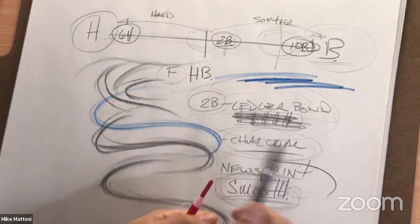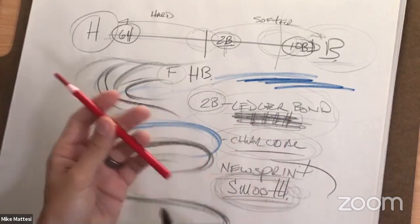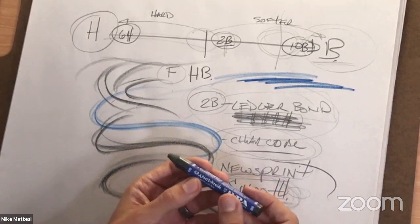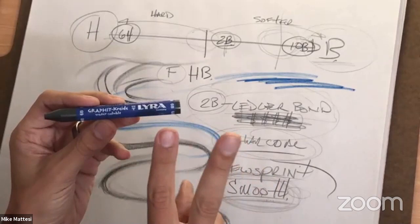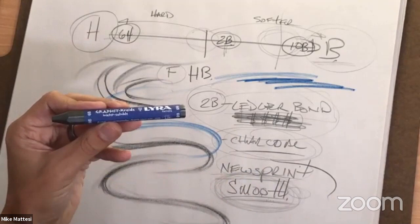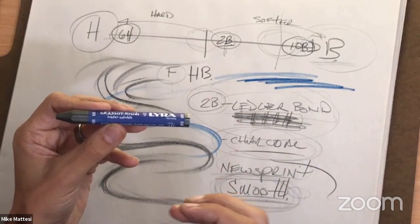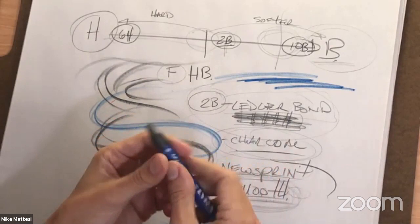So the journey went: 2B pencils, charcoal, newsprint, china marker, then Caran d'Ache. Not that long ago — maybe eight or ten years — I found Lyra graphite sticks. They have two types: water soluble and non-water-soluble. I prefer the water-soluble because it's blacker and darker. I've always been striving to find a tool somewhere between wax and graphite — I want the smoothness of graphite but the blackness of wax. The Lyra graphite is pretty close.